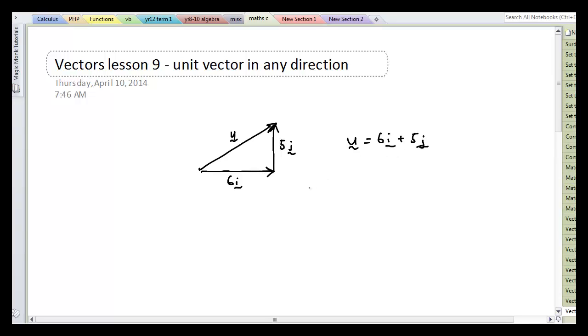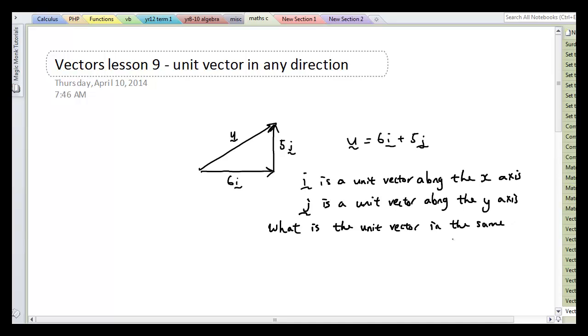Now i and j are unit vectors. i is a unit vector along the x axis and j is a unit vector along the y axis. Now my question to you guys is, what is the unit vector in the same direction as u, as vector u. Right, so we have i which is a unit vector along the x, so i is just one unit along this way, and j is one unit upwards.